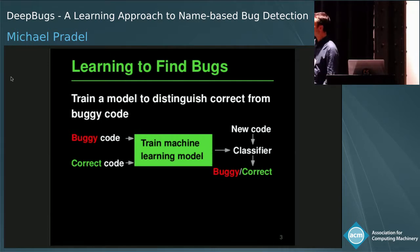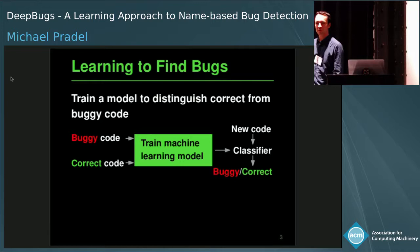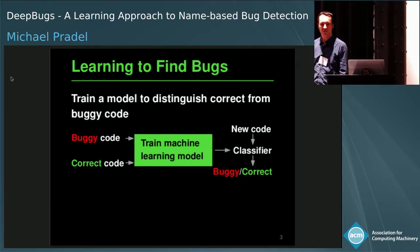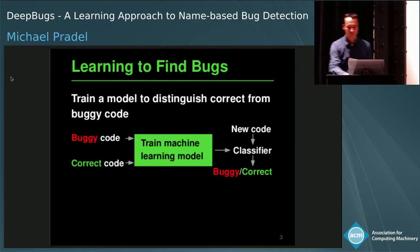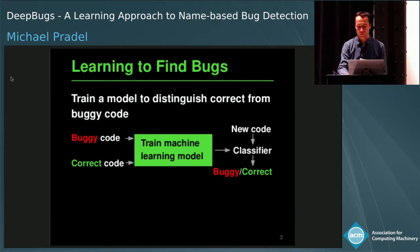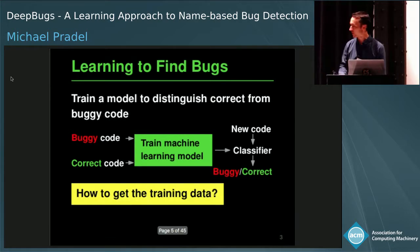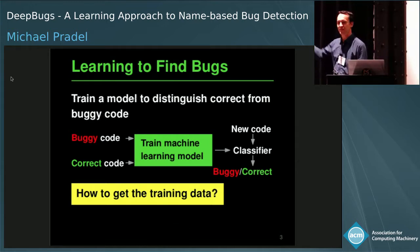At least so far, I do not claim that we can train a general model to identify buggy code. But it's code that is buggy because it's an instance of one particular bug pattern. Now, given this high-level idea, you may have many questions — for example, how do we get this training data? How do we get examples of correct and buggy code?